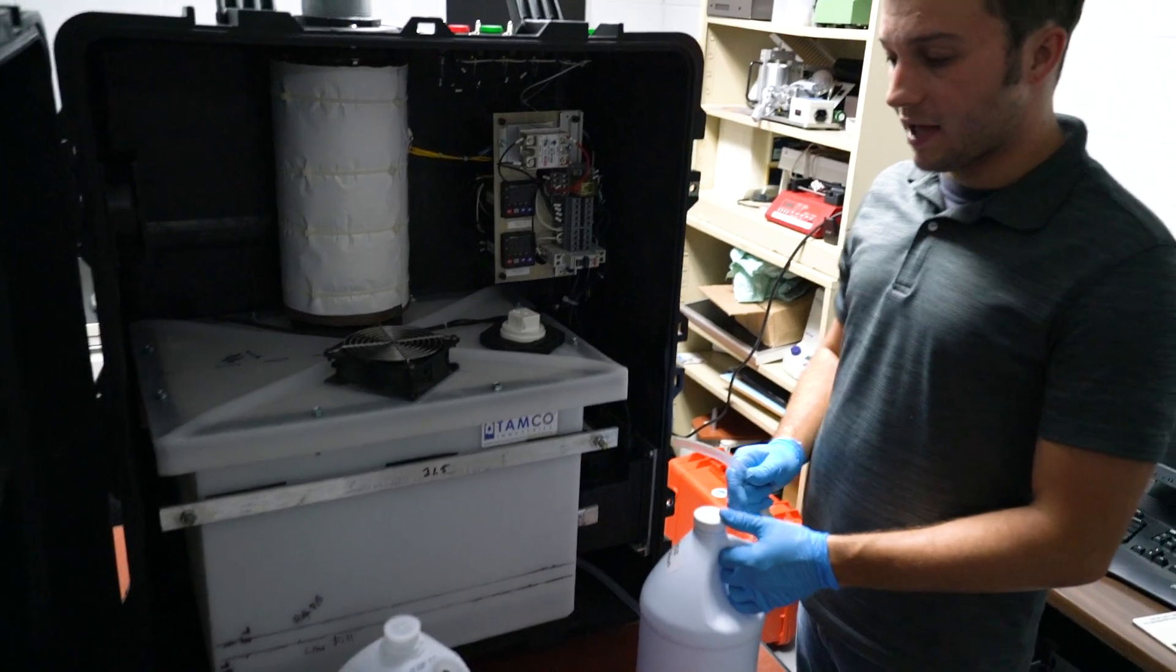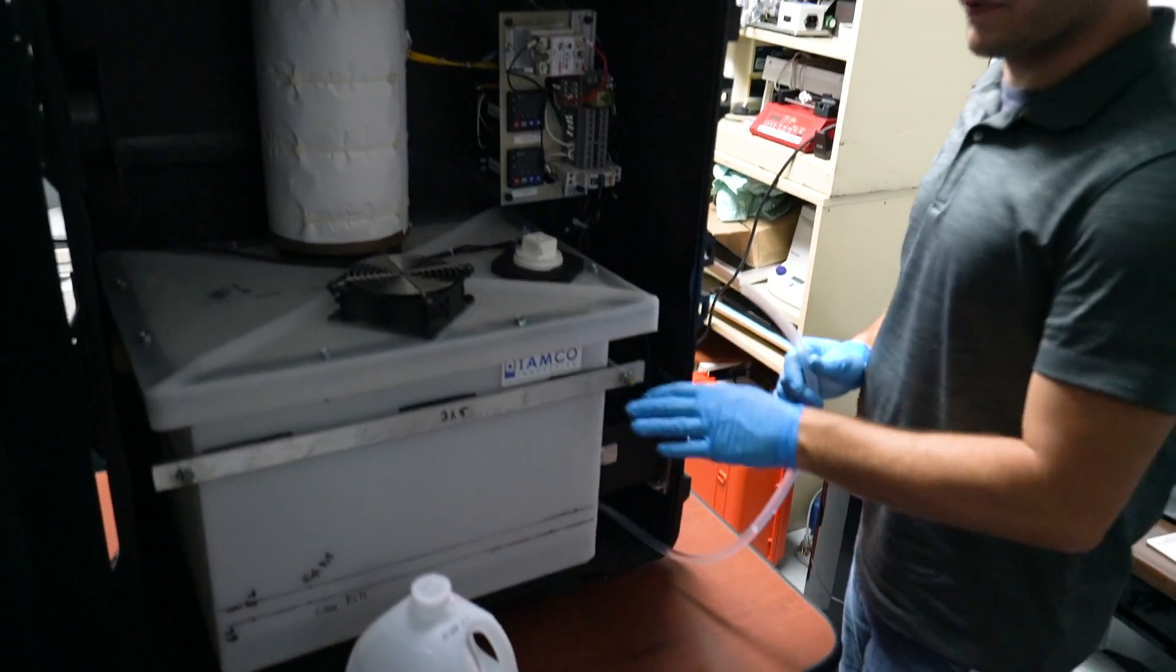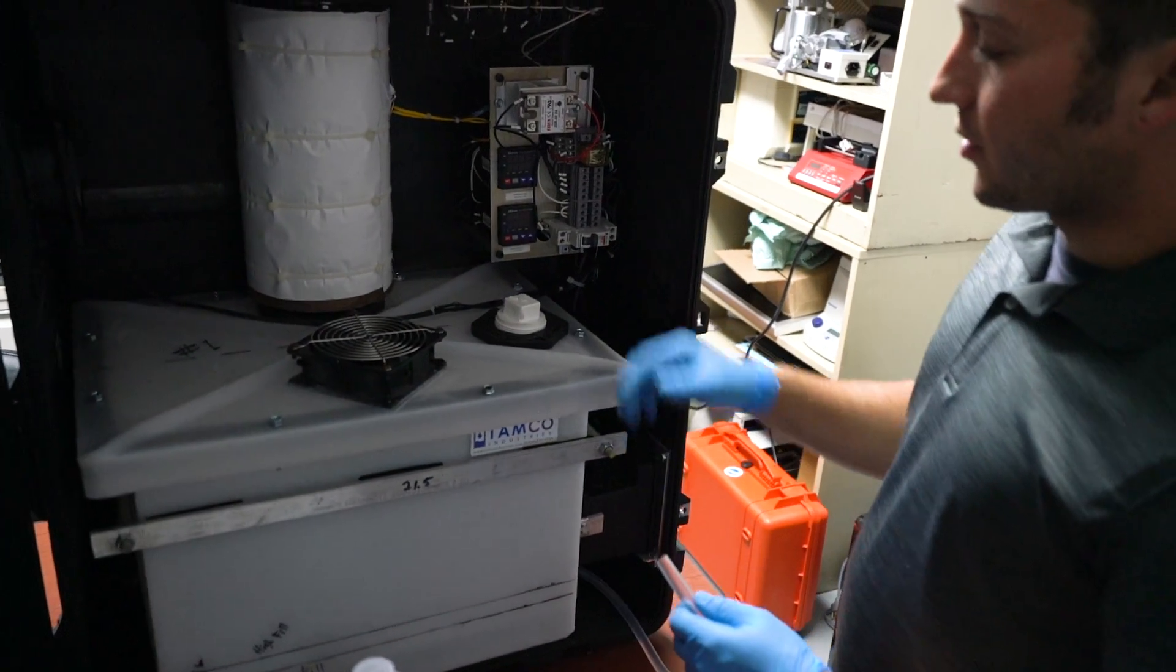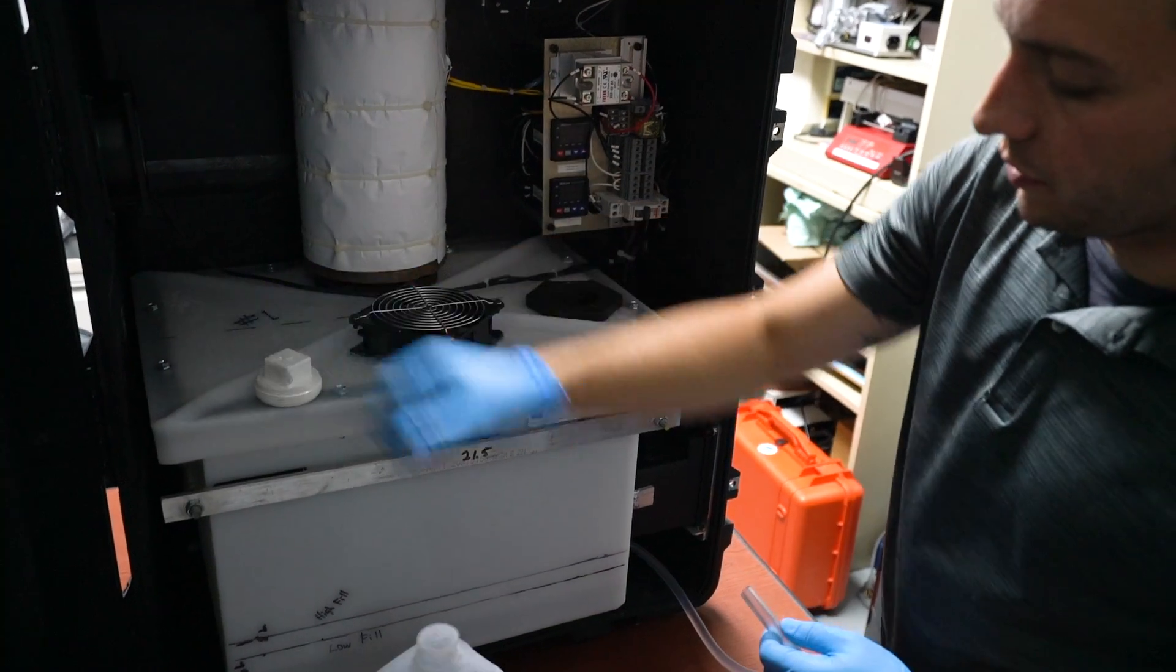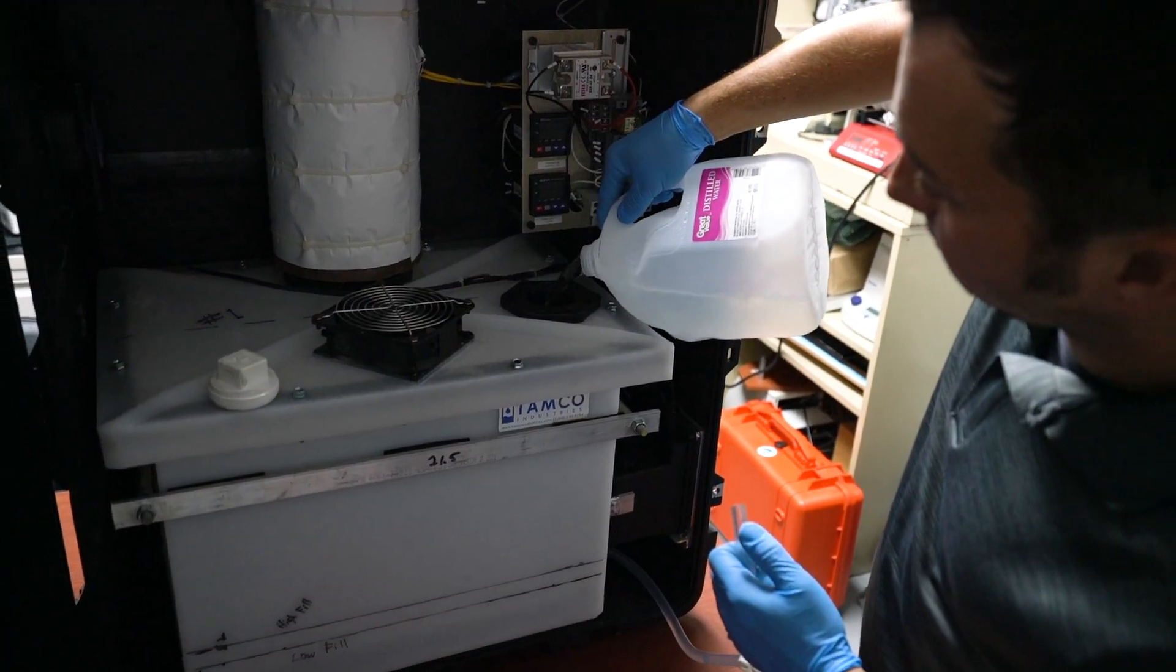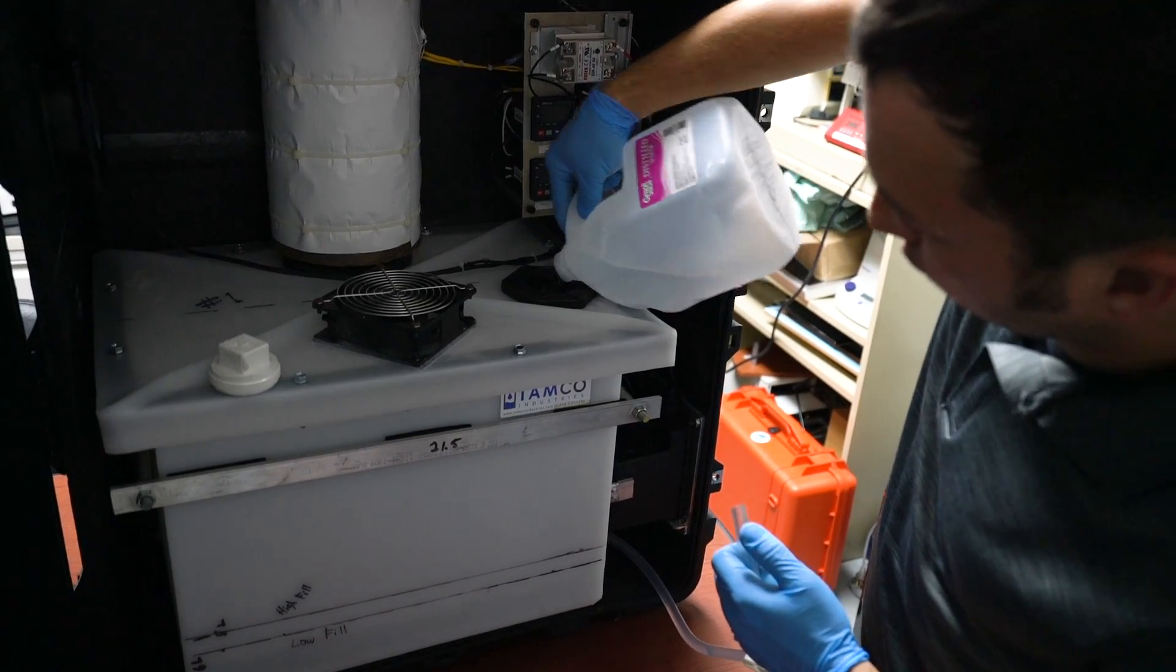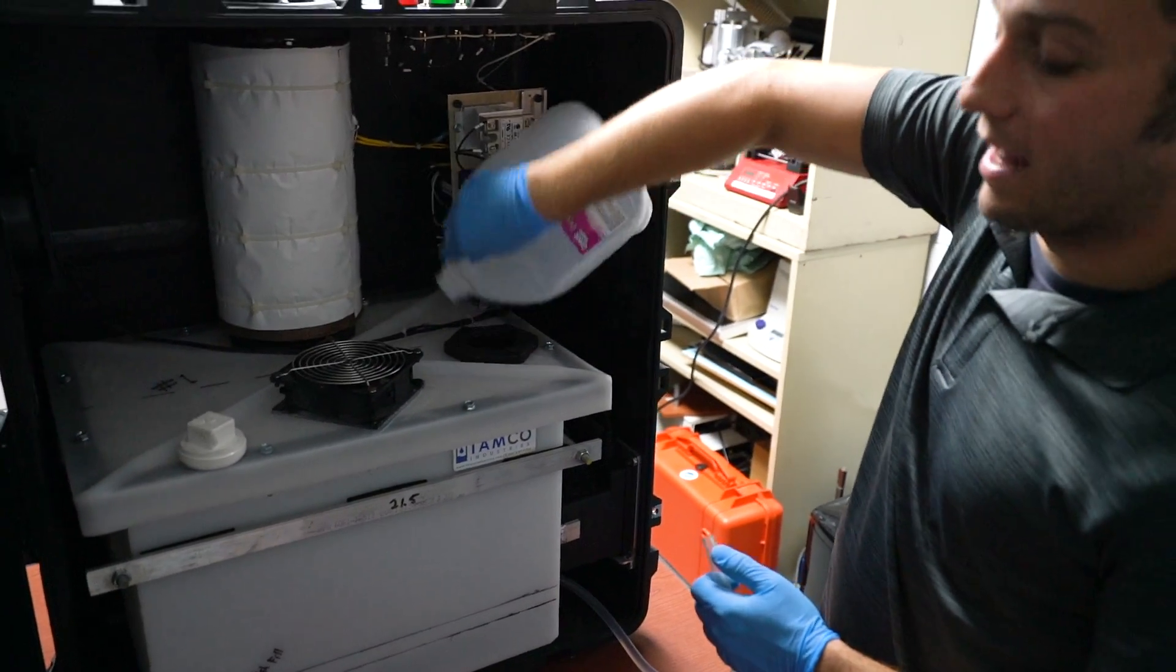Once the hydrogen peroxide solution has been drained from the reservoir tank, you will then want to rinse with distilled water. This procedure is done exactly like filling the tank. Remove the fill plug, pour distilled water. It is recommended to use at least a gallon.